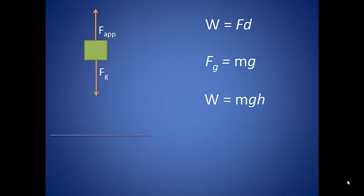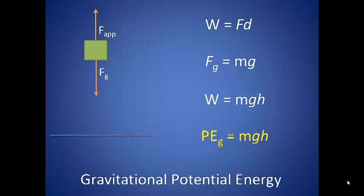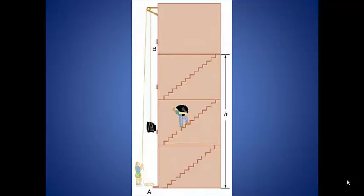When you do work against the gravitational force, that energy becomes stored as gravitational potential energy. An object's gravitational potential energy is due to its position relative to the Earth. When positive work is done on the object, the distance above the Earth is increasing, and so the gravitational potential energy increases as well.